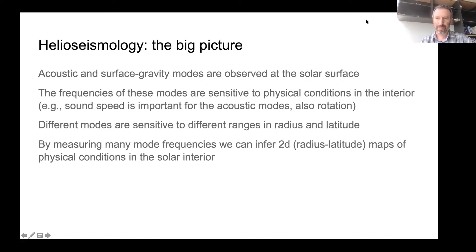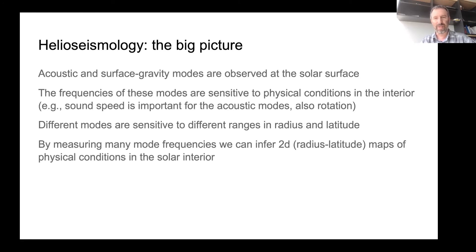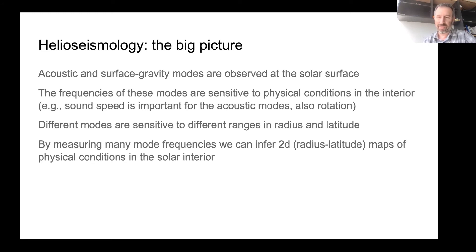Here's the really big picture. We can see acoustic and surface gravity modes at the solar surface, and the oscillation frequencies of these modes depend on physical conditions in the interior. For example, modes propagating in the direction of rotation have higher frequency than modes propagating in the opposite direction, and the sound speed matters for the frequencies of the acoustic modes. Different oscillation modes are sensitive to different ranges in latitude and radius. By measuring mode frequencies for many, many modes, it's possible to map what's going on in the solar interior.